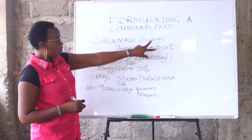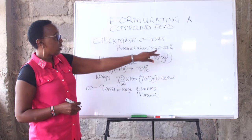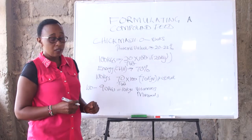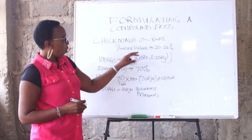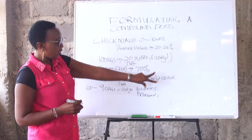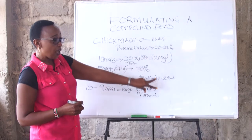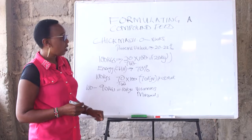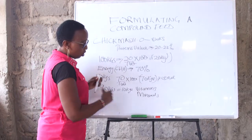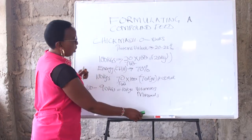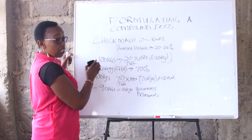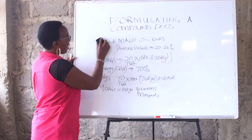The chick mash should contain 20 to 23% protein. So if you are doing a chick mash, this is all you require to do the percentages. If you are doing a grower's mash, I hope you have written down the percentages for the chick mash somewhere.